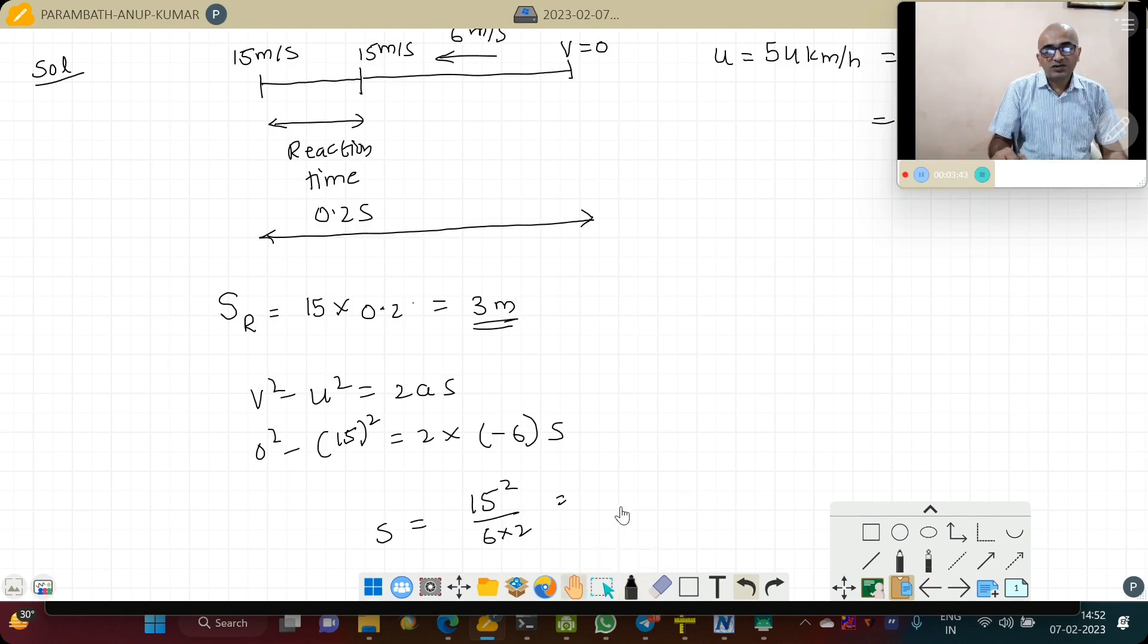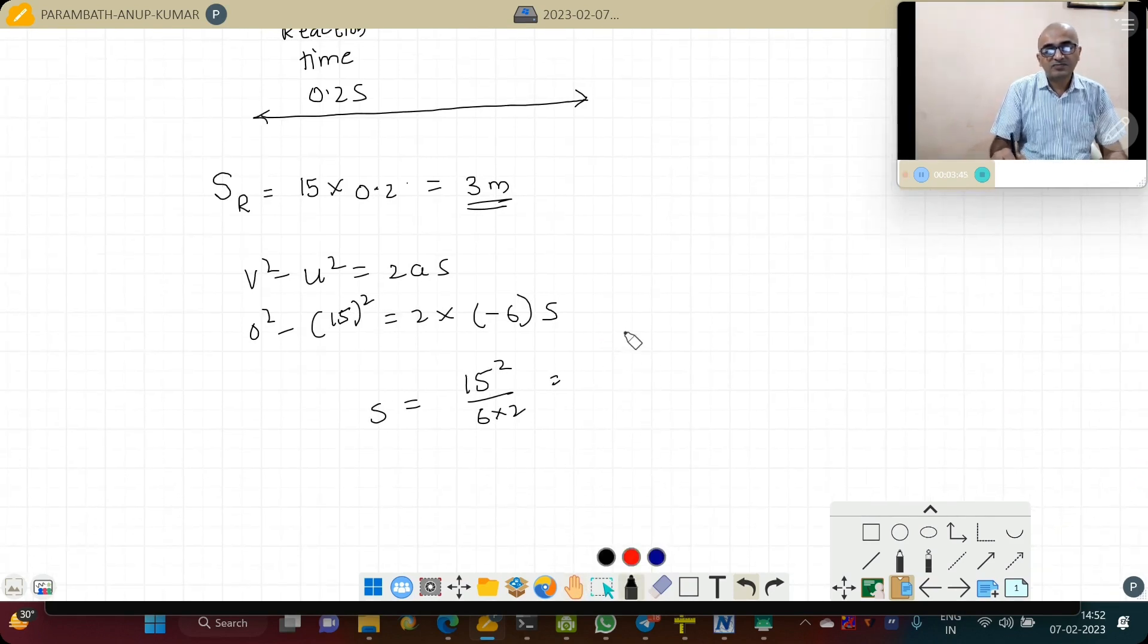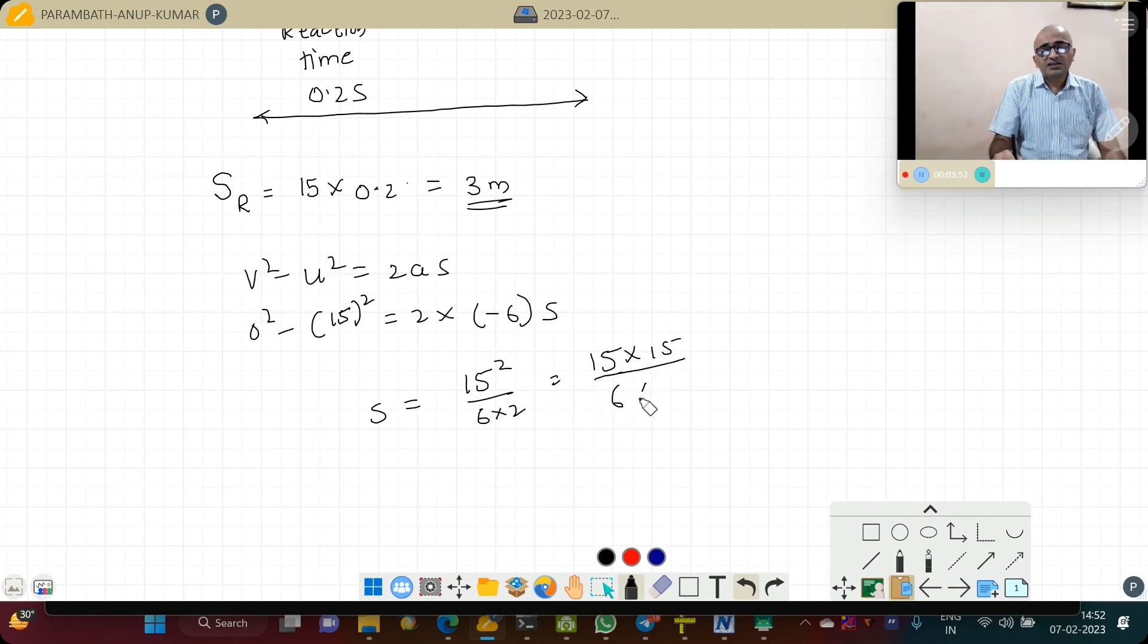So S is equal to 15 square divided by 6 into 2. Now this one is 10 into 15 divided by 6 into 2. This will go by 2 and this is 3. 15 square is 75 divided by 4.